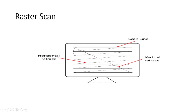After drawing each row the beam performs a horizontal retrace to move to the leftmost pixel of the next row. When it finally reaches the bottom right pixel, it performs a vertical retrace and moves back to the top left to start drawing a new frame. This entire cycle is repeated 30 or 60 times per second depending on the refresh rate. The horizontal retrace is performed multiple times per frame, once per row, while the vertical retrace is done once after the whole frame is drawn.